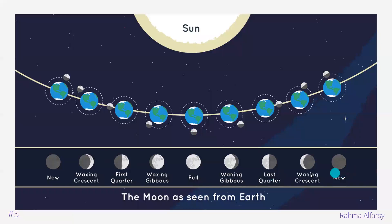One thing to note is that no matter where the moon is in its orbit, it is always half lit up by the sun. Half of it is always reflecting the sun's light, as you can see here, here, here and here.